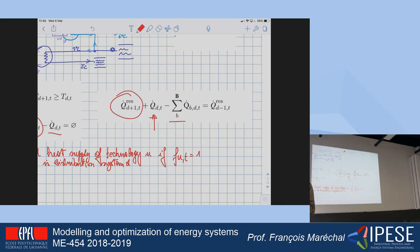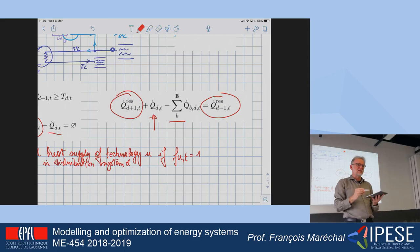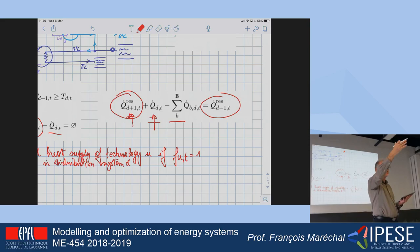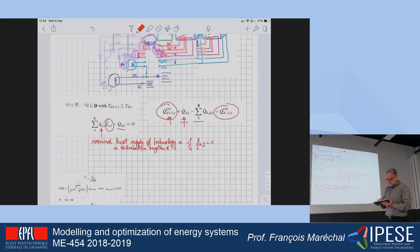If I'm supplying heat at a high temperature, I can always use this heat at a lower temperature. I'm making a heat cascade balance here, saying that the heat supplied at level d can also be supplied by a higher temperature level if heat is available there.